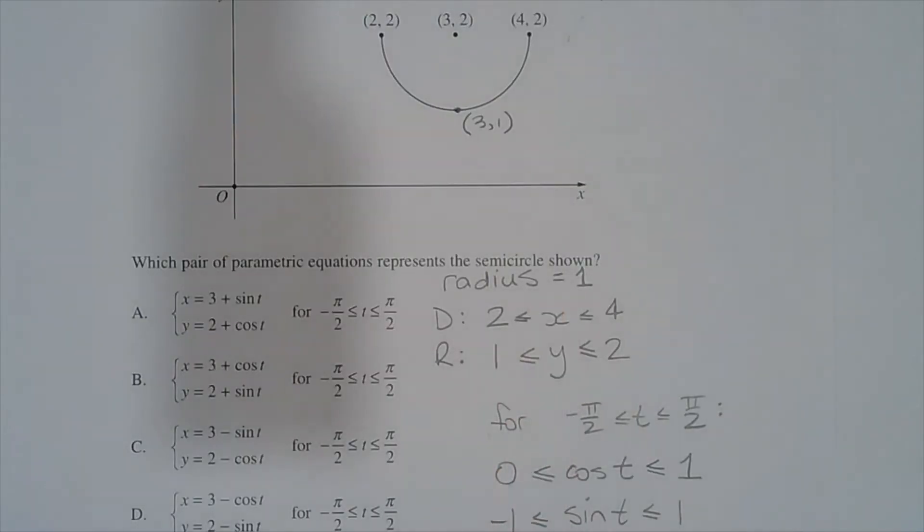The radius of the semicircle equals 1 unit. The domain is x greater than or equal to 2 and less than or equal to 4, and the range is y greater than or equal to 1 and less than or equal to 2.